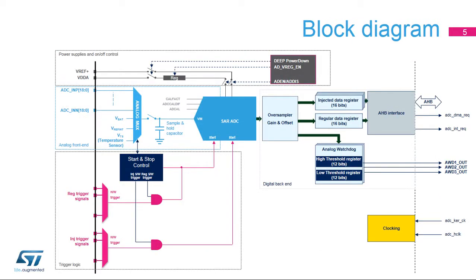This slide shows the general block diagram of the ADC. The main important subunits are the power supplies and on/off control, the analog front end, the trigger logic, the digital back-end including the analog watchdogs and the AHB slave interface, and the clocking. The next slides detail all these subunits.